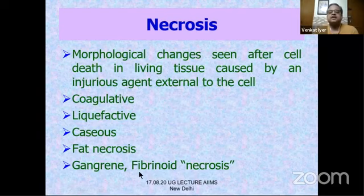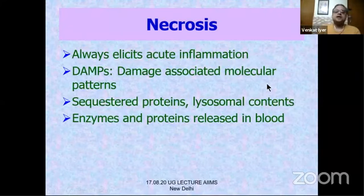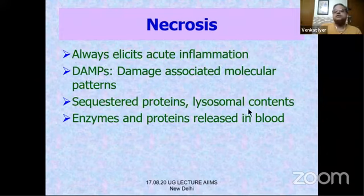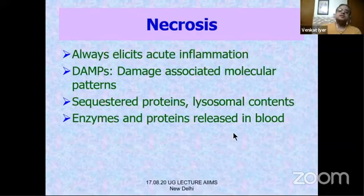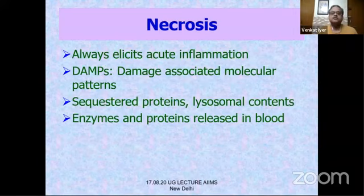Necrosis always elicits acute inflammation because of expression of DAMPs — damage-associated molecular patterns. Sequestered proteins and lysosomal contents also always elicit inflammation. Enzymes and proteins released into the blood serve as markers of necrosis — for example, if the heart is damaged, the necrotic heart cell releases troponin into the blood, indicating myocardial infarction. Troponin is never normally present in blood.